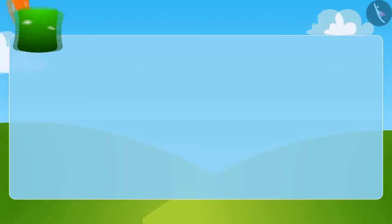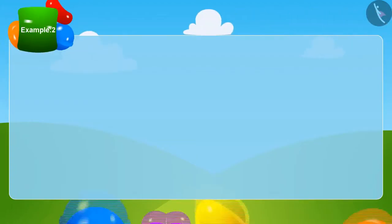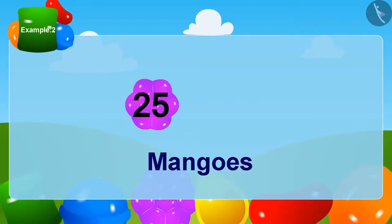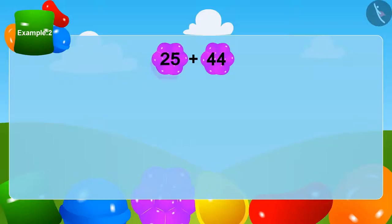Let's see how many mangoes Appu has got. Appu first got 25 mangoes. Now, he has 44 more mangoes. How many mangoes does Appu have now? Let us add 44 and 25.